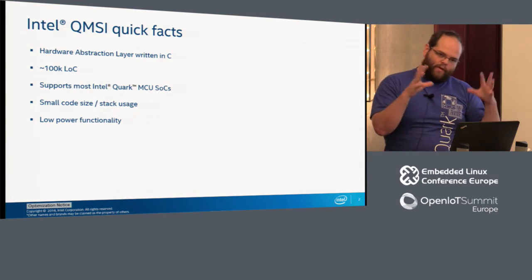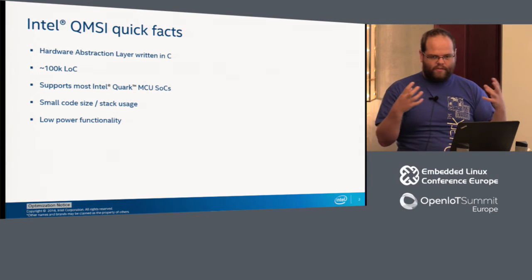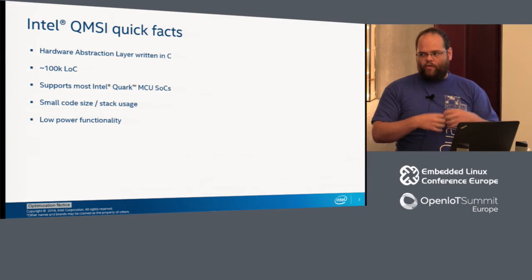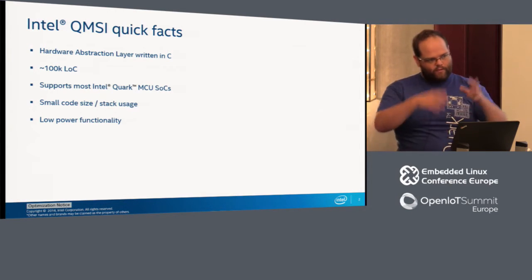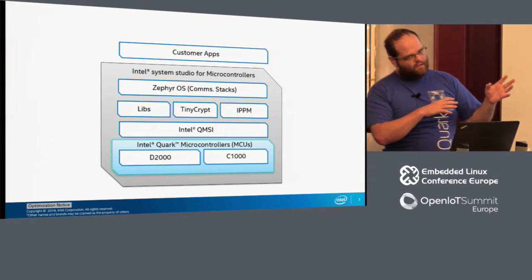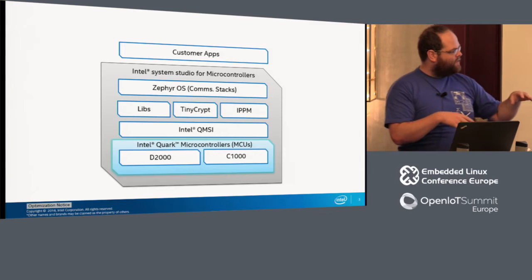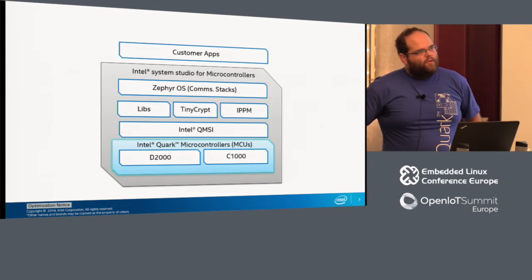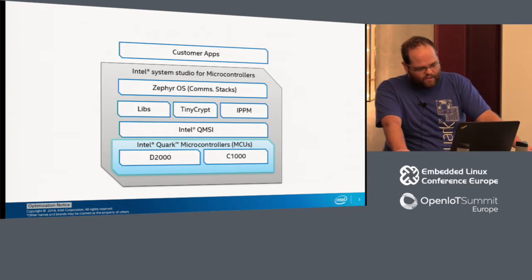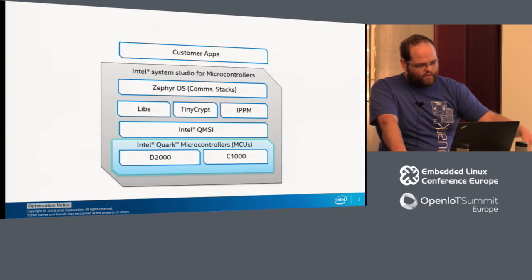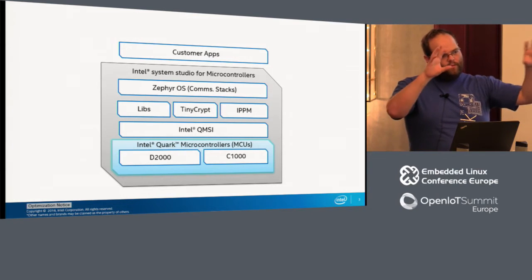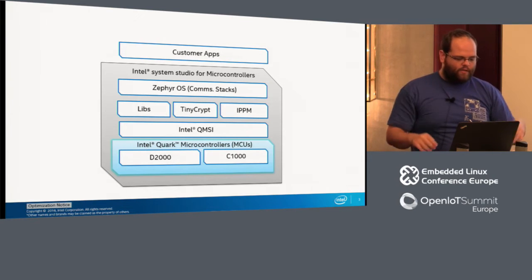So how does QMSI fit into the grander scheme of things? If a new developer wanted to build an application, how would they go about choosing hardware and building software? This slide acts as both an agenda and a progress indicator. The first step is always to evaluate your hardware options. We have Quark microcontrollers as Intel's MCU option, and QMSI sits on top of that as the hardware abstraction layer, along with other components that people can pick and choose as they wish.